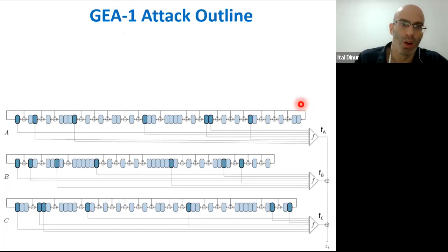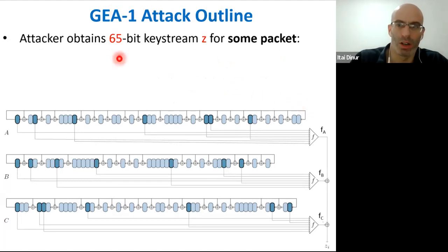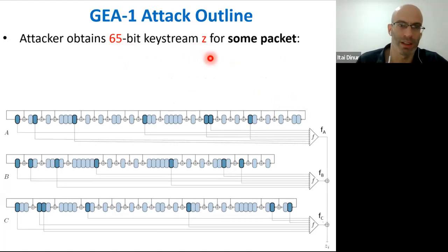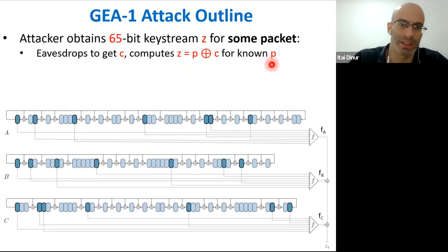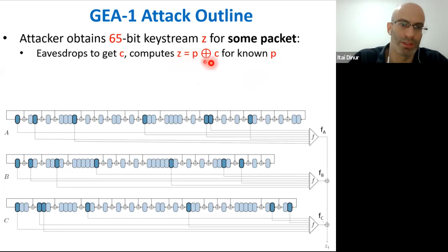Now let's think about how to break GEA1. We assume the attacker obtains 65 bits of known keystream, denoted Z, for some packet. In practice, to obtain this keystream we need to eavesdrop to get the ciphertext and assume we know the corresponding plaintext. 65 bits of keystream is typically not difficult to obtain because you can guess it from known fixed headers. The keystream is just the XOR of the plaintext and ciphertext.